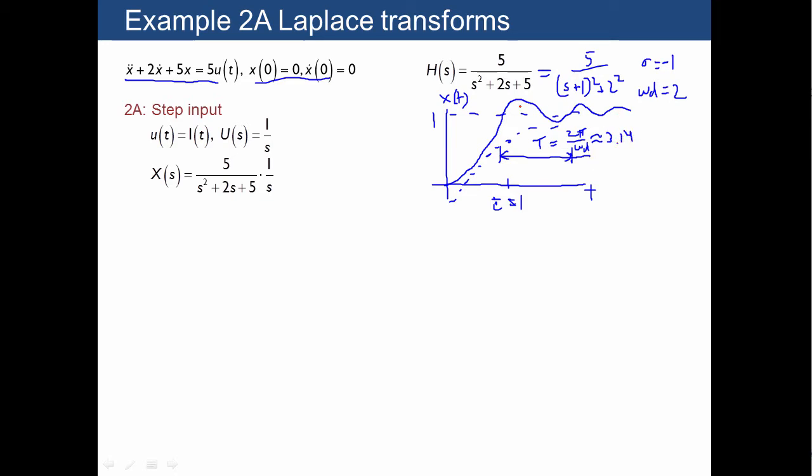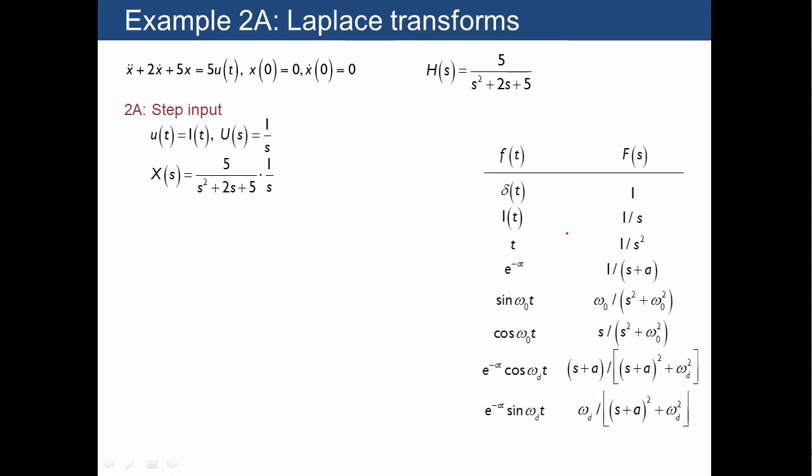Where 2 pi over omega d is just going to give us about 3.14. So we already have an expectation on how to solve this. The next question is, how do we actually do this using Laplace transforms? The transform table is shown here.